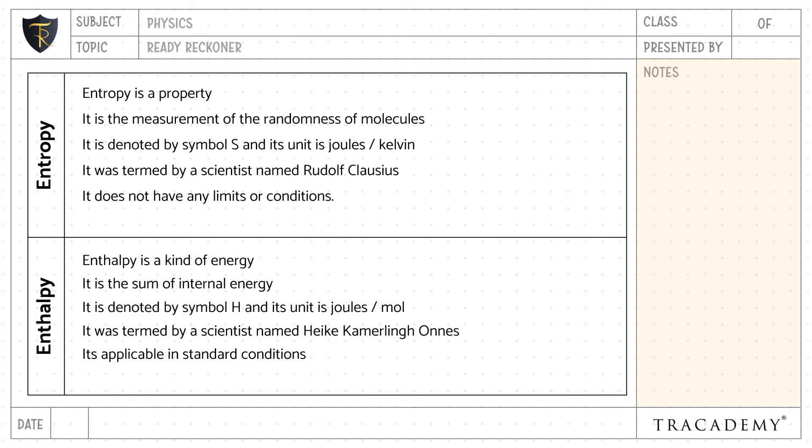Chemical systems favor maximum entropy whereas when it comes to enthalpy, they favor minimum enthalpy as it provides greater stability.